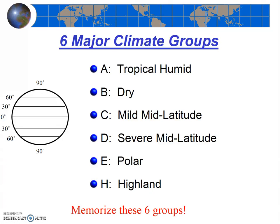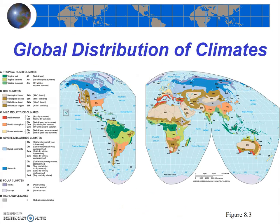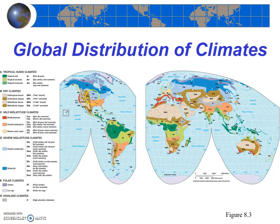Those are our six major climate groups, and you definitely should memorize their names and letters — remember that it often has a relationship to latitude. Let's see what the actual distribution looks like on a map. You can see the rough relationship to latitude when you see the green A climates near the equator, then some B climates, C climates in the mid-latitudes, D climates even more poleward or in the interiors, and lastly our E climates in the poleward regions.